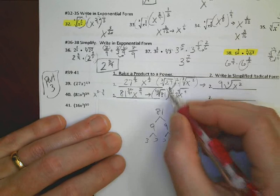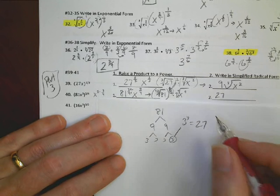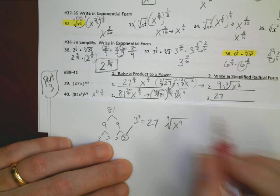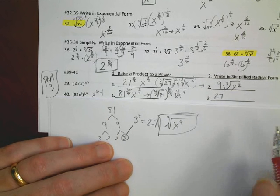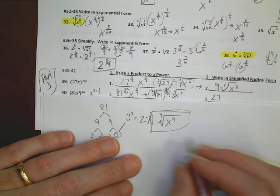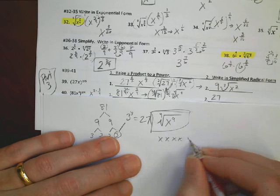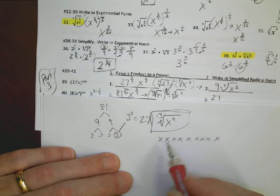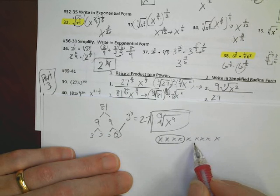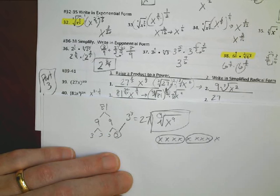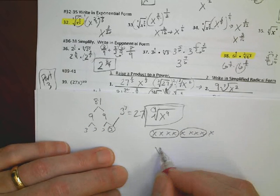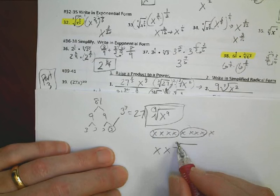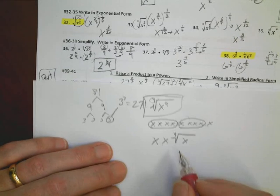So I know I have a 27 for my whole number there. But now I still have this x to the 9th and the 4th root with that thing. So I have to figure out what do I do with that stuff there. Here's a way of thinking about it. x to the 9th means 9 x's. 1, 2, 3, 4, 5, 6, 7, 8, 9. A 4th root means, like we do with a 3, let's find 4 of these things. And I have 1 left over.